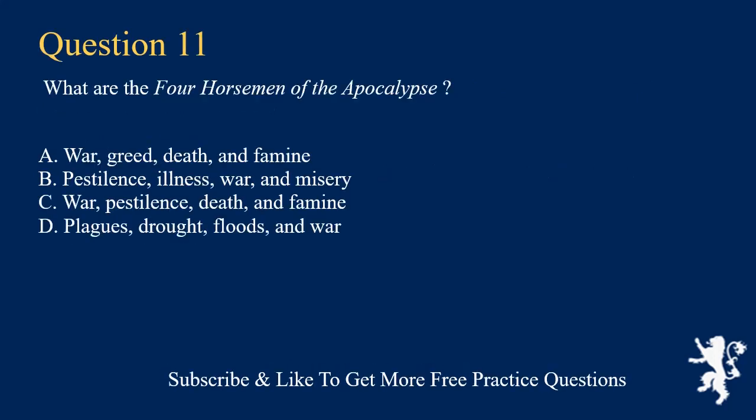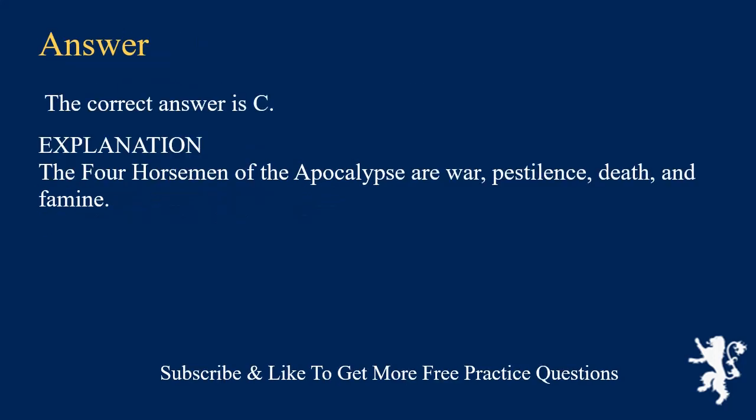What are the four horsemen of the apocalypse? A. War, Greed, Death, and Famine. B. Pestilence, Illness, War, and Misery. C. War, Pestilence, Death, and Famine. D. Plagues, Drought, Floods, and War. The correct answer is C.